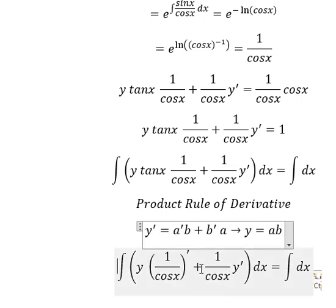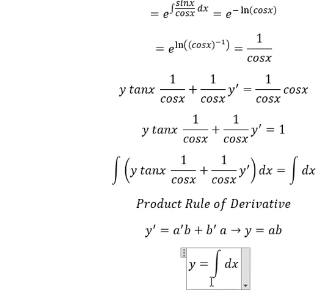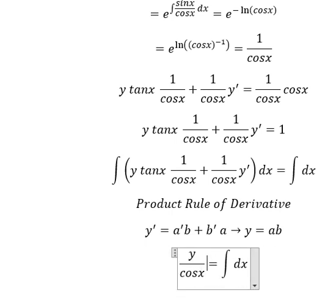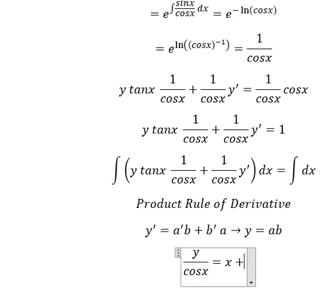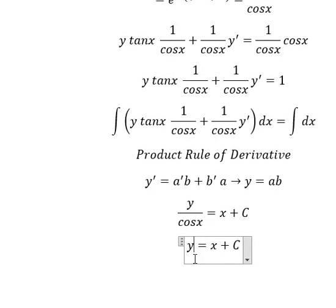So the integration gives us y over cosine(x) equals x plus C. Now we multiply both sides by cosine(x) to solve for y.